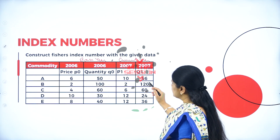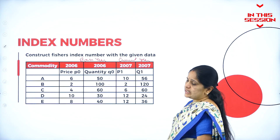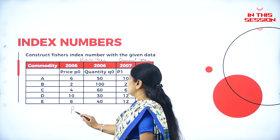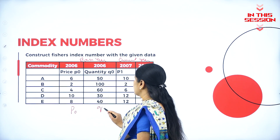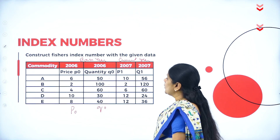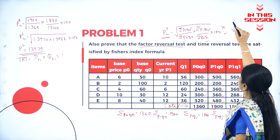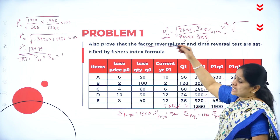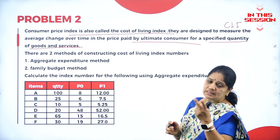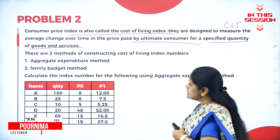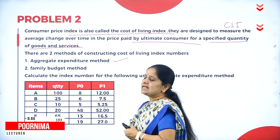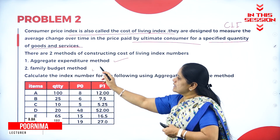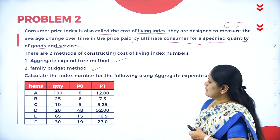In the current year, we have the prices and the quantities. The base year prices we call PO and the base year quantity we call QO. For a quantity index number, Q1 comes first and then the price. There are two methods of constructing index numbers: the first is the aggregate expenditure method, and the second is the family budget method.